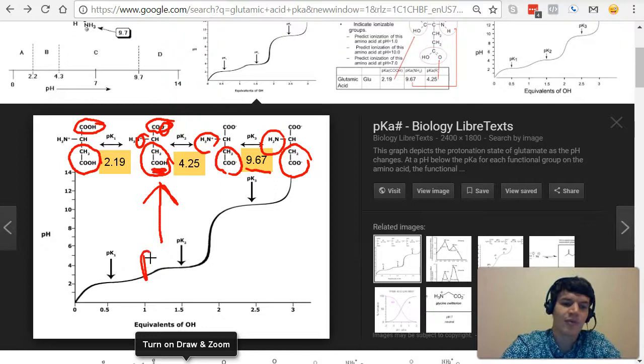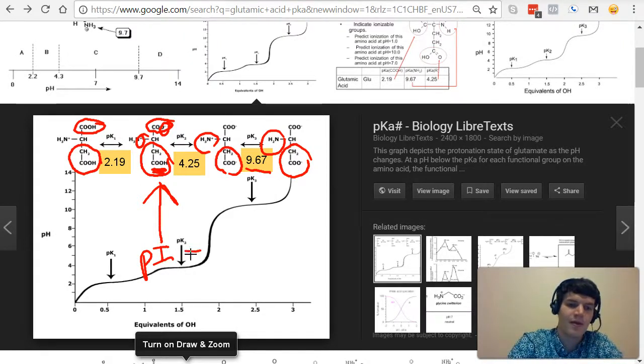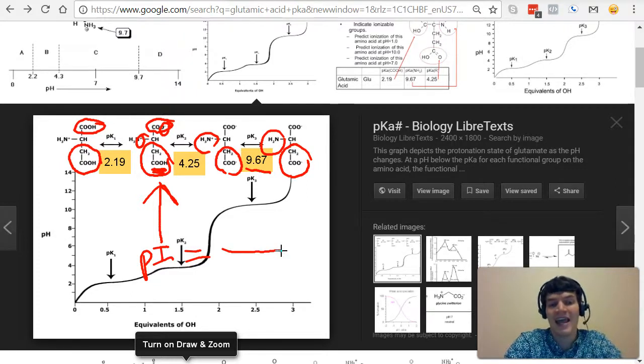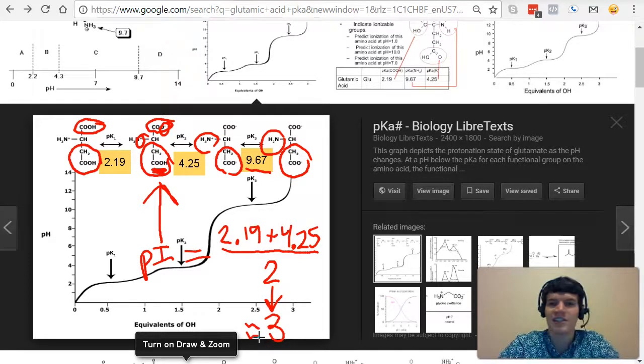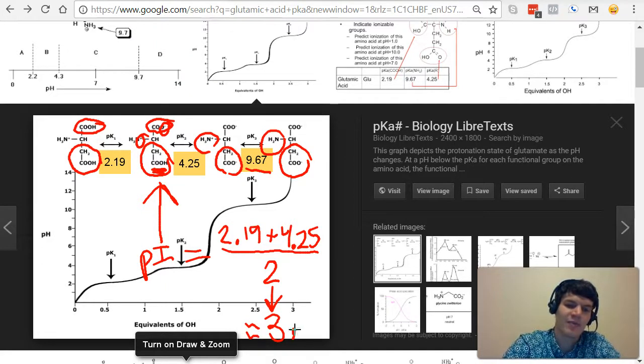Therefore, our isoelectronic point is going to be somewhere in there. And we determine it by taking the average of the two surrounding pKa values. And that's going to give me a value that is close to three. Obviously, on the MCAT, you don't need to calculate exact numbers. You just need to calculate approximations. But if we were to calculate this exactly, the exact answer would be 3.22.